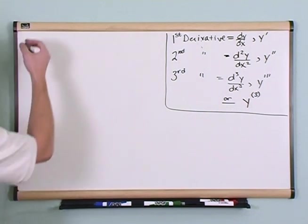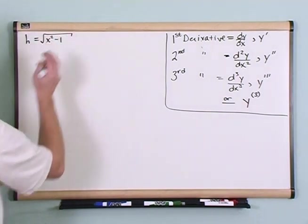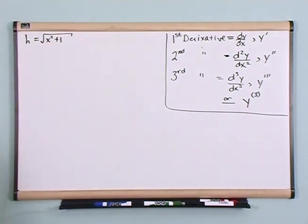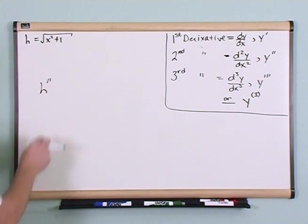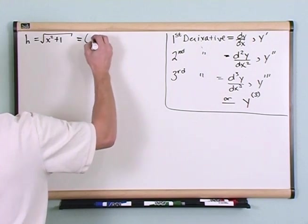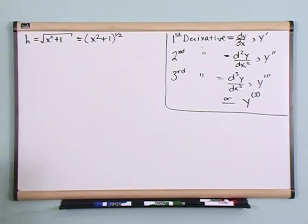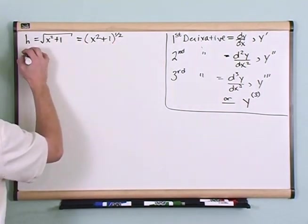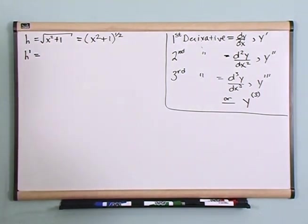What if you had a function h equal to the square root of x² plus 1, and the question is: find the second derivative of h? The first thing I like to do is get rid of the radical and write it as an exponent. When you take the square root, you're raising something to the 1/2 power. Now let's take the first derivative of this term using the chain rule.